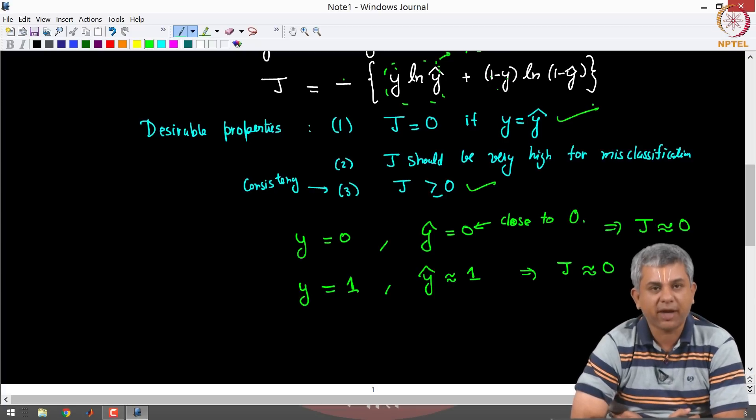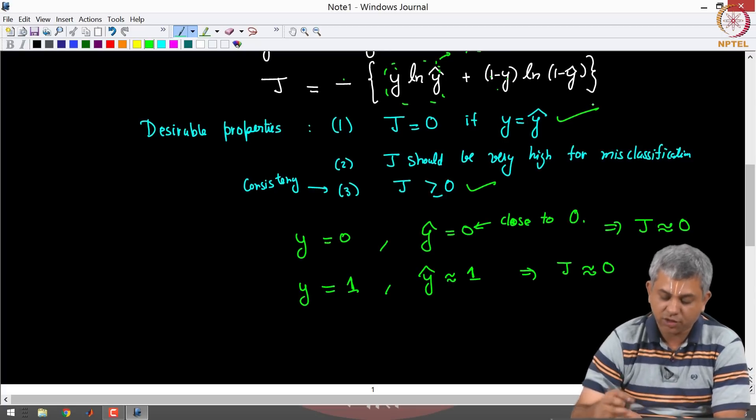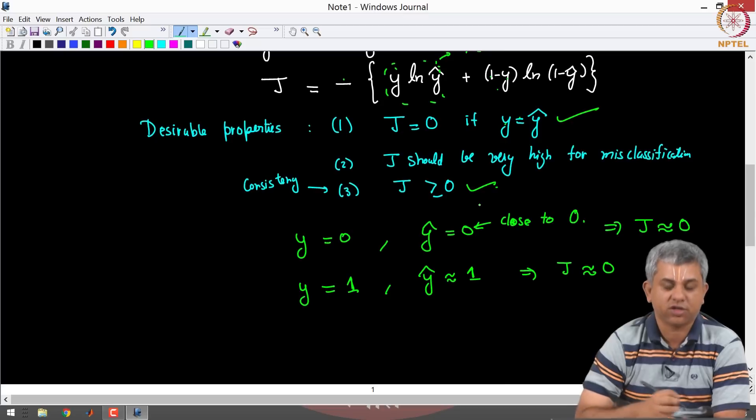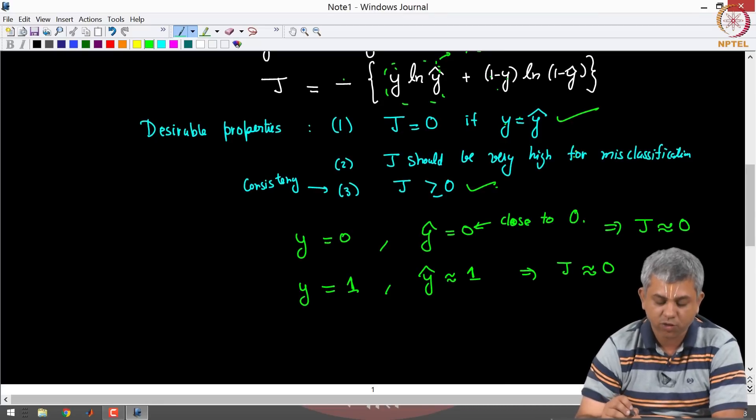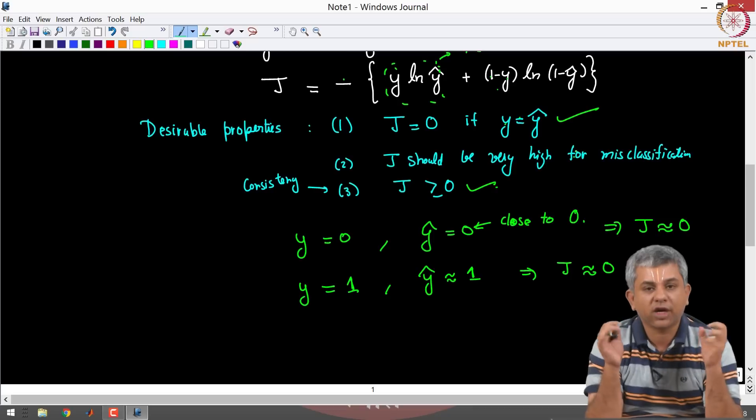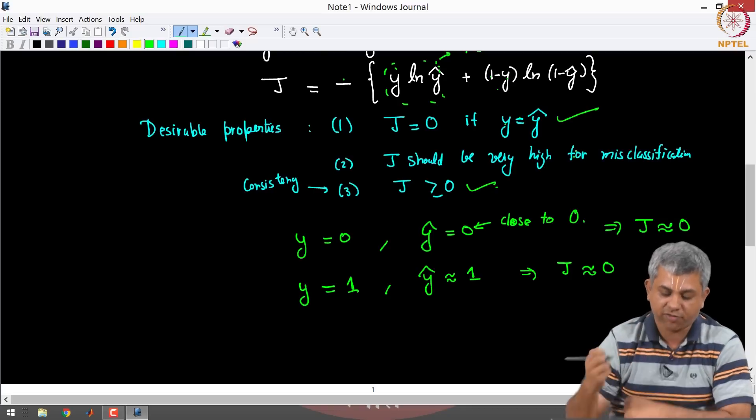And third, which is the main property. So these two properties are true of least squares also, but this property is the one that least squares does not satisfy. So what we want is J should be quote unquote high in case you have misclassified.